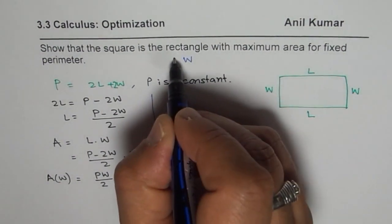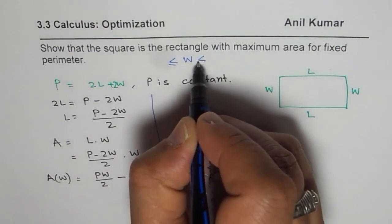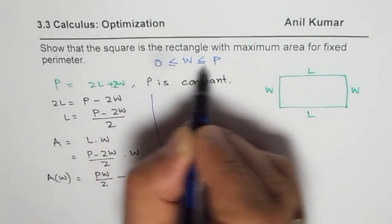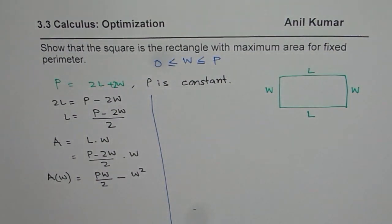We can say that width can maximum be equal to perimeter. At least it will be 0. So those are the boundary conditions for the width.